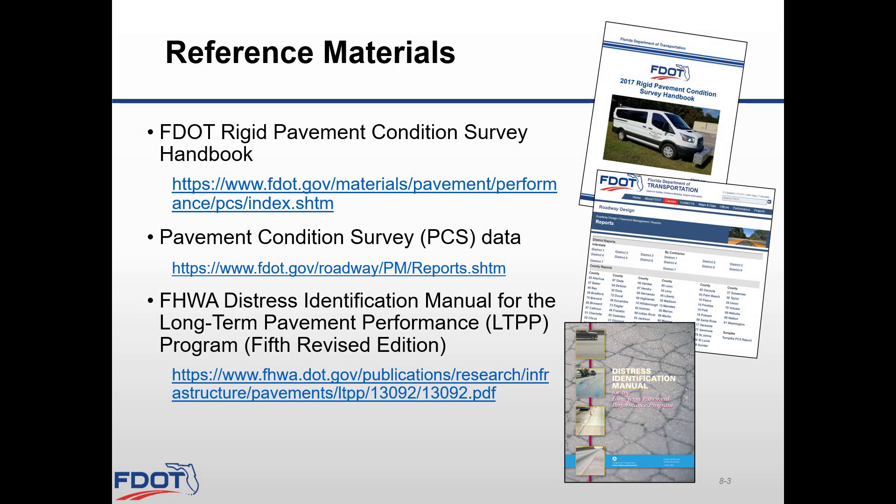Let's look at some good reference materials. We are introducing you to the FDOT Rigid Pavement Conditions Survey Handbook, a guide developed to provide the procedures for conducting visual, mechanical, and automated pavement condition evaluation of the department's rigid pavement system. The data collected is uploaded to the Pavement Conditions Survey website per district or per county to prioritize projects based on their ratings for ride and cracking parameters. Another helpful reference is the FHWA Distress Identification Manual for the Long-Term Pavement Performance Program, fifth revised edition. Links to all these manuals are provided in this slide.